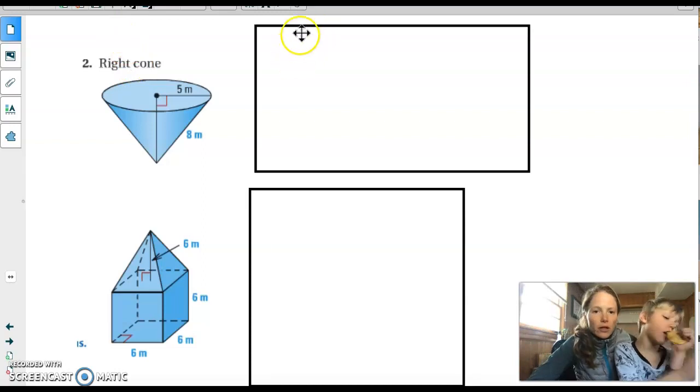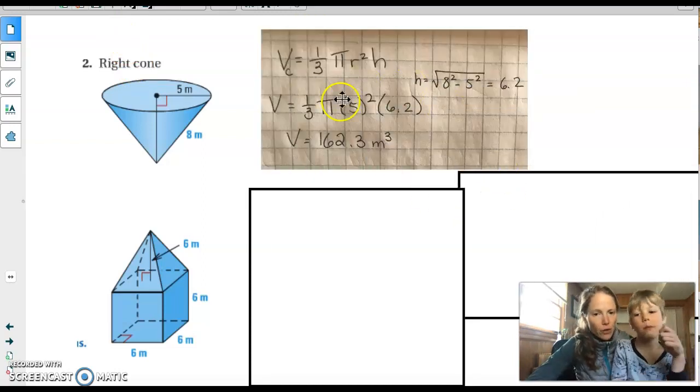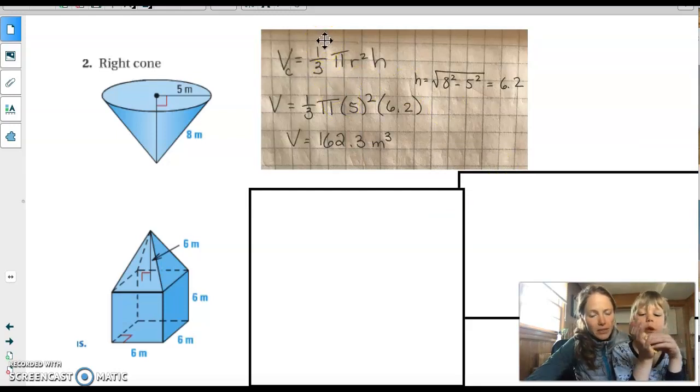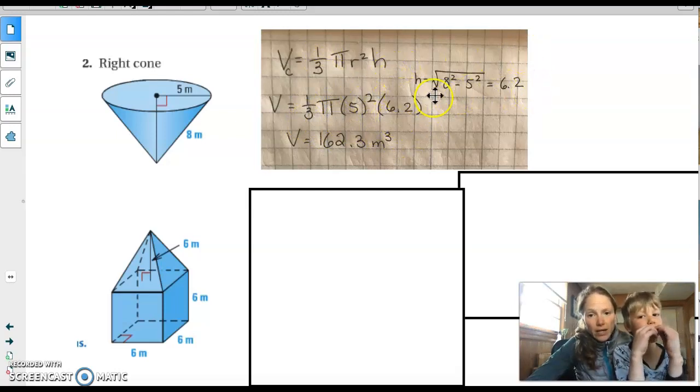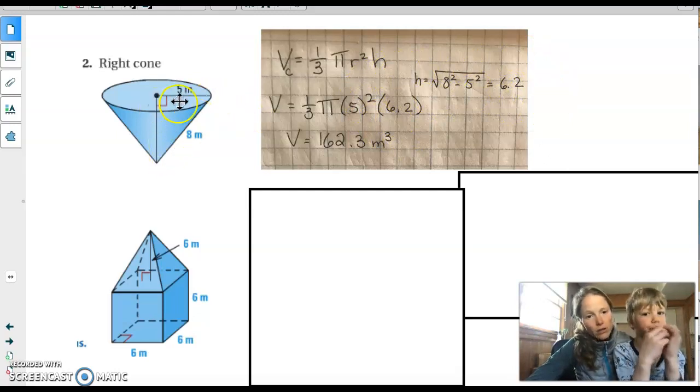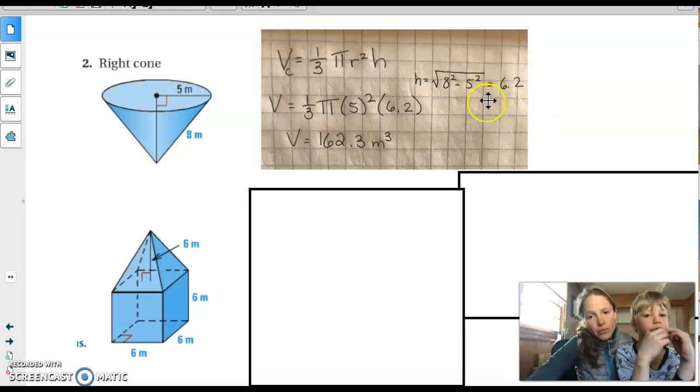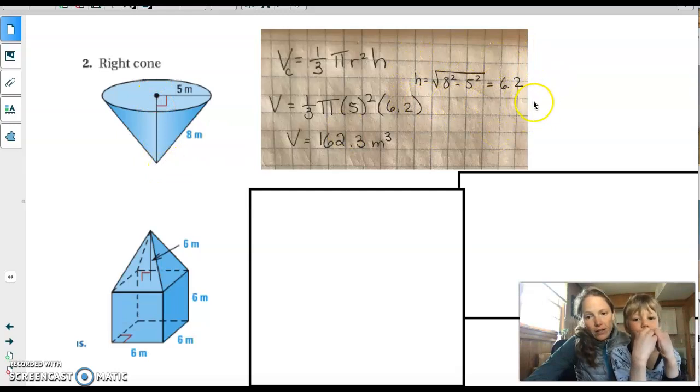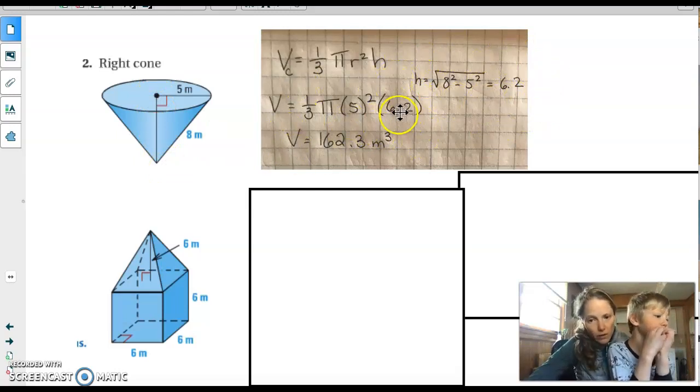All right, so if we look at our cone here, this one's pretty straightforward. We're just doing 1 third base times height. The radius is 5. The height we have to find using Pythagorean theorem. So here is my height calculation using Pythagorean theorem. I know the hypotenuse of the triangle. I know one leg. So I can find this height is 6.2. That's my work for finding the height using Pythagorean theorem. I plug everything in. Here's my volume.